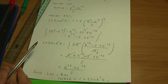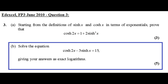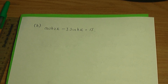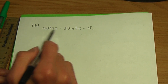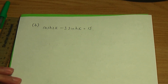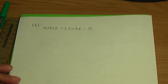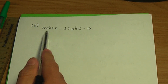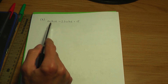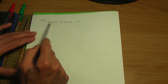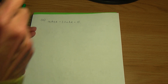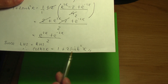Now we need to solve the equation in part b: hyperbolic cos 2x minus 3 hyperbolic sin x equals 15, giving our answers as exact logarithms. We need to use an identity to rewrite the equation in terms of sinh. The identity we need is the one we just proved.